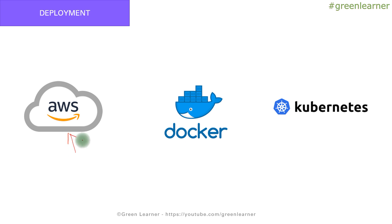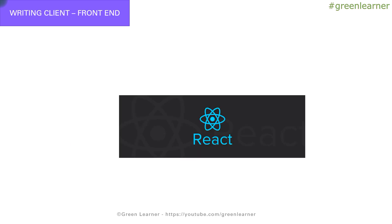Coming to the deployment part, I am going to deploy each individual service into AWS and show how we can use deployed microservices. I am also going to explain how you can create Docker images out of the microservices, push them into Docker registry, pull them, and start your microservices directly from the Docker images. I am also going to explain the use case of Kubernetes and how we can use it.